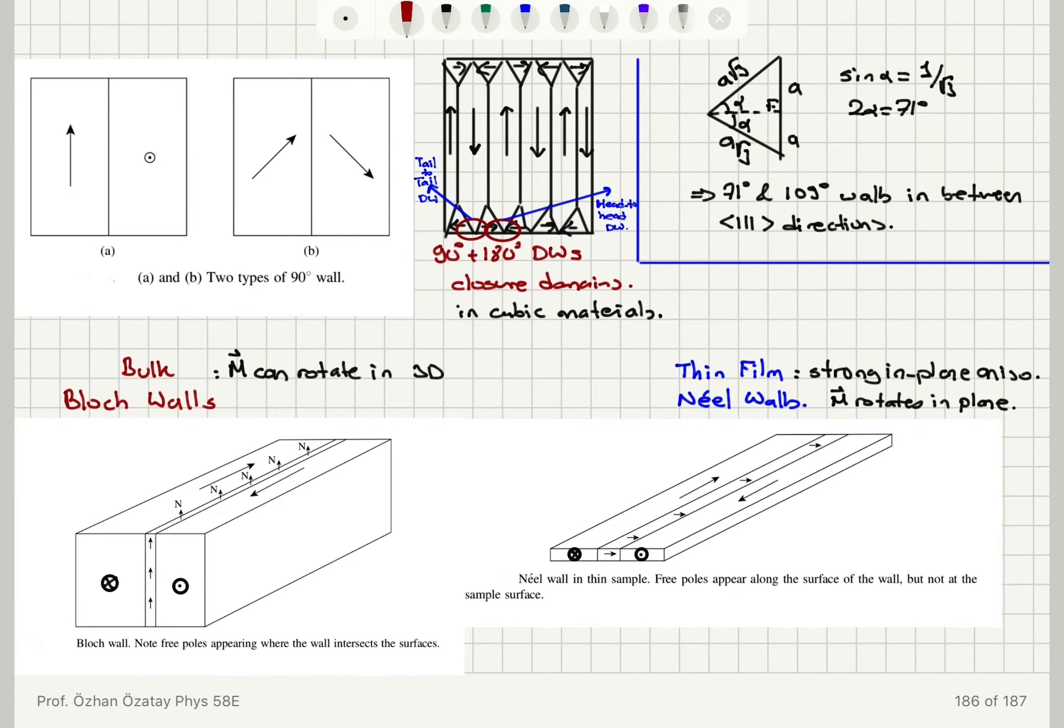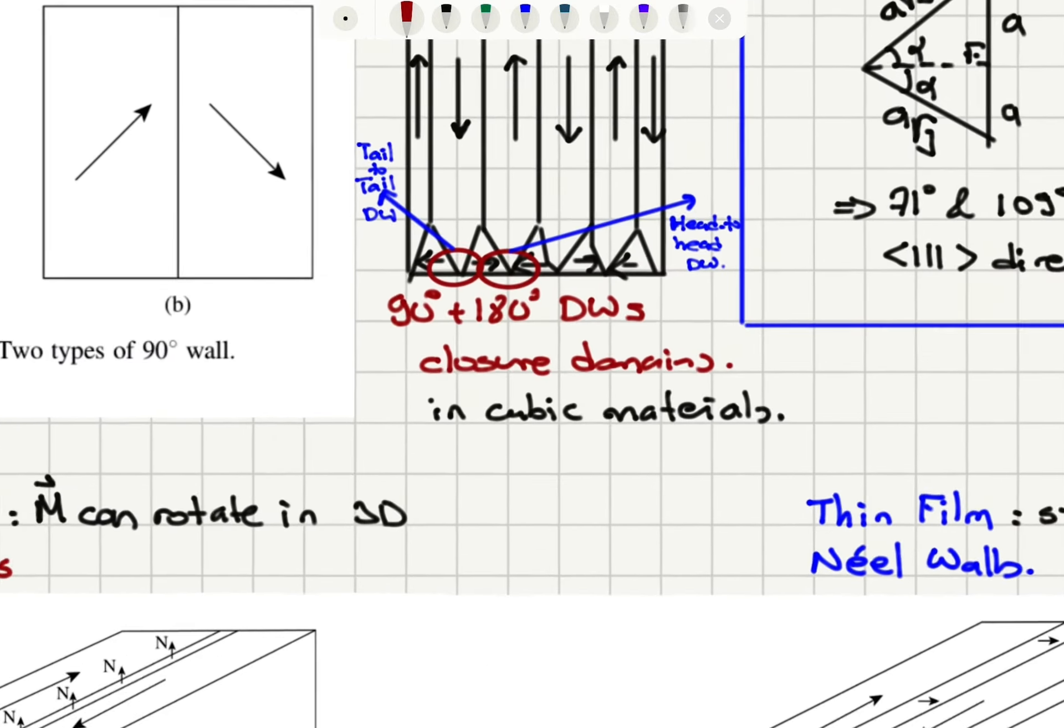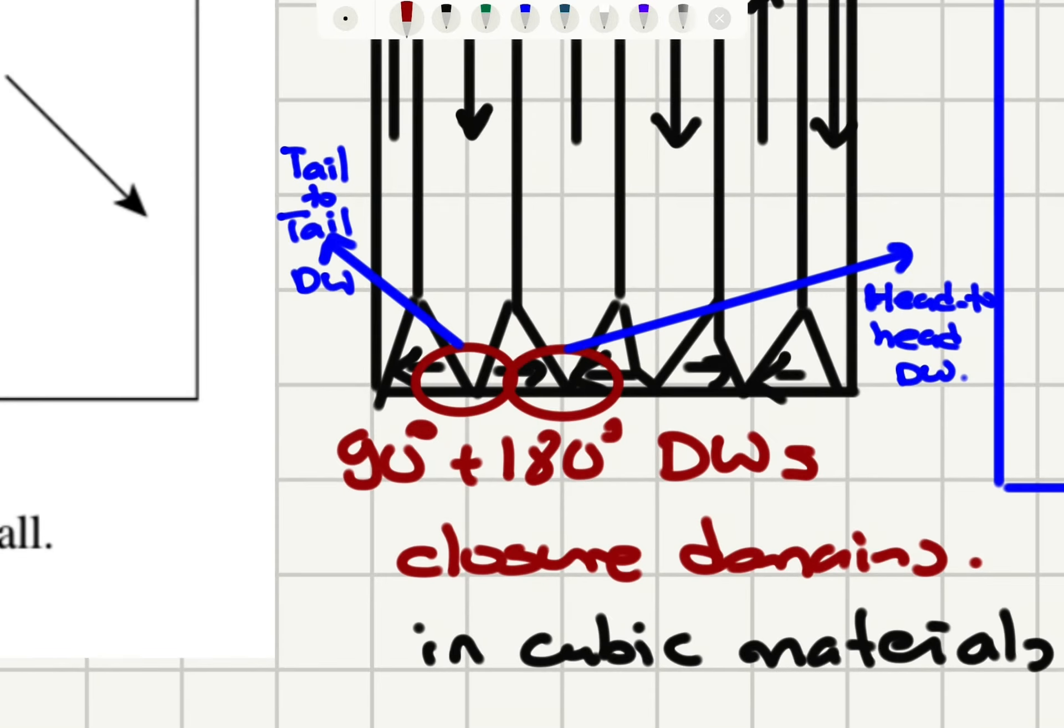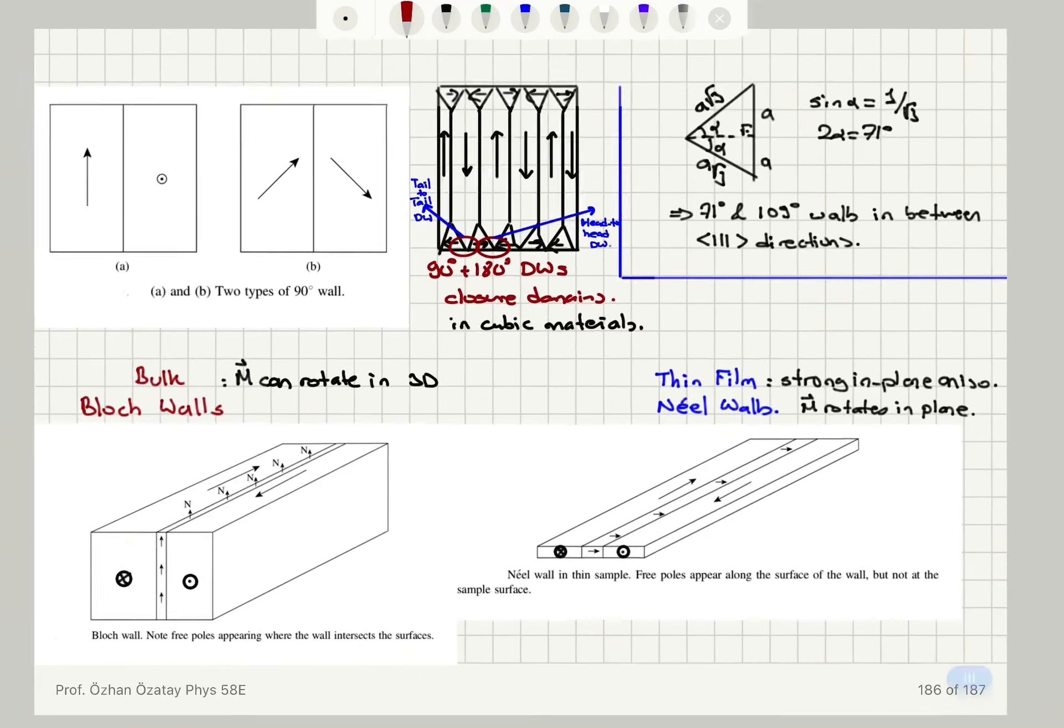When we have 90 degree domain walls together with 180 degree domain walls in cubic materials, they usually make these closure domains. When you zoom into the boundaries between these domains, you can see that we have the formation of head-to-head and tail-to-tail domains. If the arrows are pointing towards each other it's head-to-head, away from each other it's tail-to-tail.